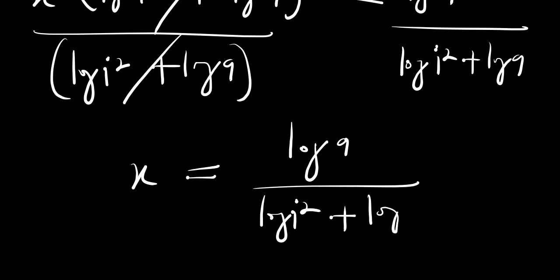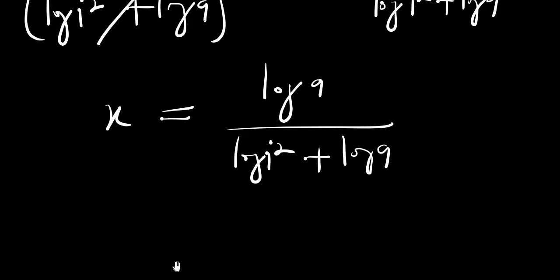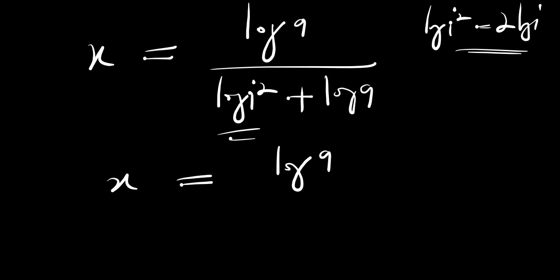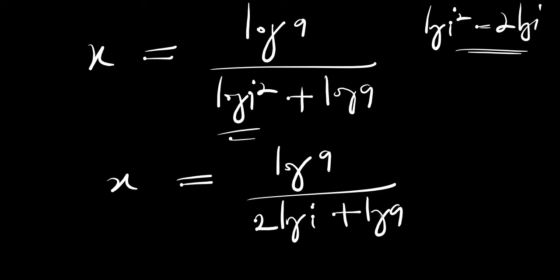If we simplify further using the identity log of i squared equals 2 times log of i, we apply that here. That means we are going to have x equals log of 9 divided by 2 times log of i plus log of 9. So we can leave it this way.